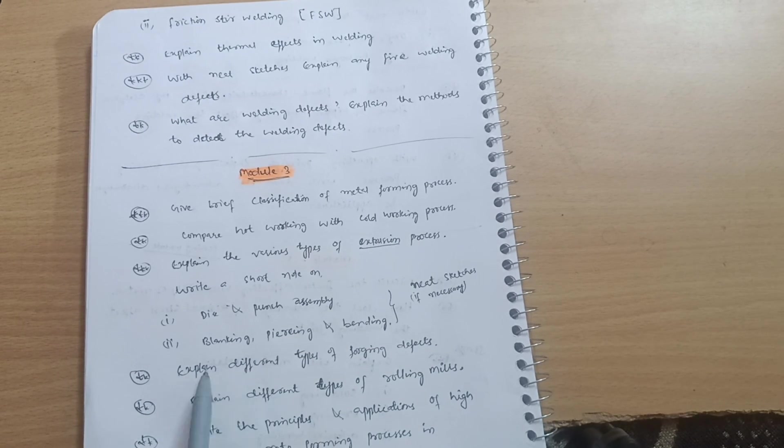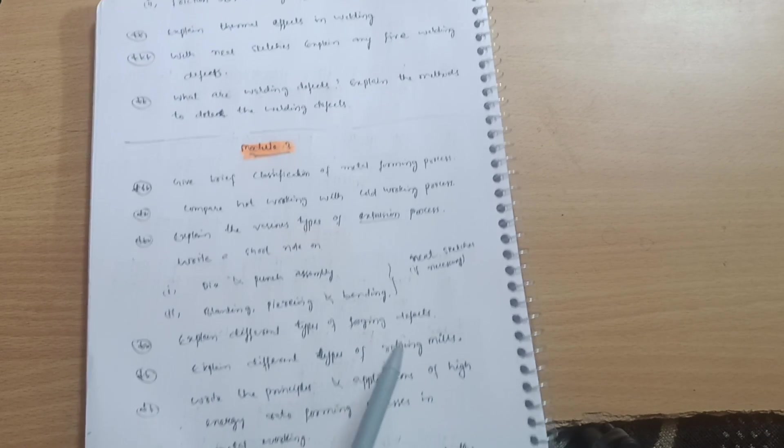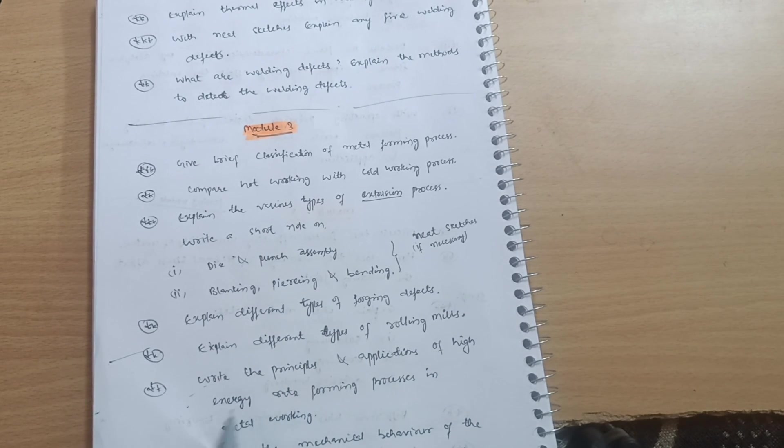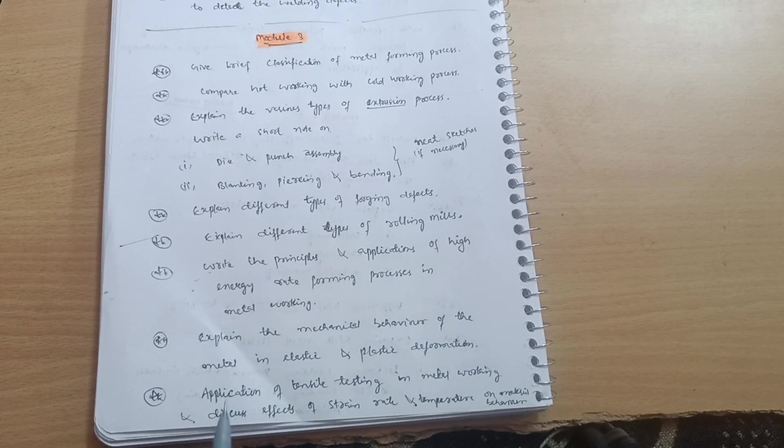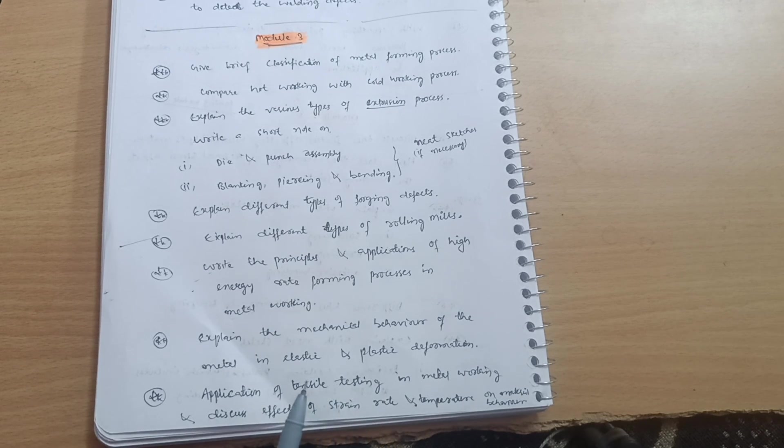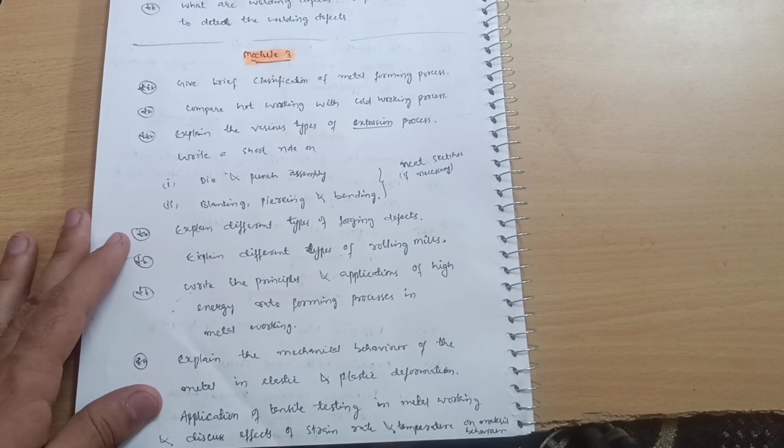Then explain different types of forging defects. Explain different types of rolling mills, most important one. Write the principles and applications of high energy rate forming processes in metal working. Next is explain the mechanical behavior of the metal in elastic and plastic deformation. Next, last but not least, application of tensile testing in metal working and discuss effects of strain rate and temperature on material behavior. This is all about Module 3. These questions you have to cover. I believe you will cover it.